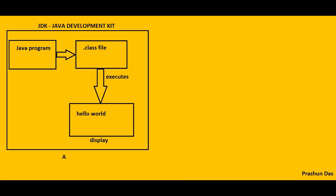So guys, JDK i.e. Java Development Kit helps a developer in developing, executing, and displaying a Java program. Hence, a developer machine like A should always contain JDK.